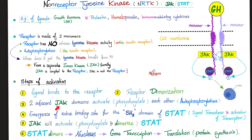So the two JAKs activated themselves, then the JAKs activate STAT. STAT from here and STAT from here form STAT dimers. They travel to the nucleus, enter via the nuclear pores, and induce gene transcription, translation — and that's how the baby grows, how you get proliferation and cell division.